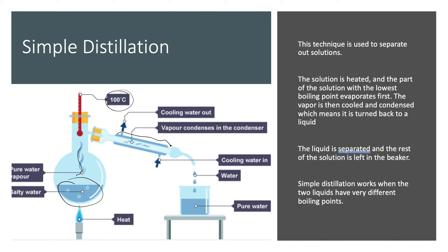At the sides of the condenser you can see cool water flowing through. This causes the vapour to condense in the condenser and turn back into liquid form. The water then comes out into the beaker at the end. By the end of this experiment we've got all the salt left in the original beaker and pure water collected separately.